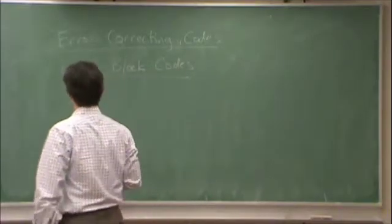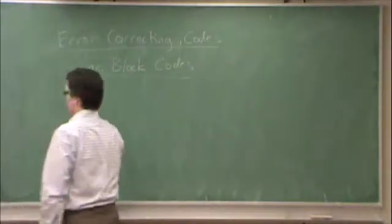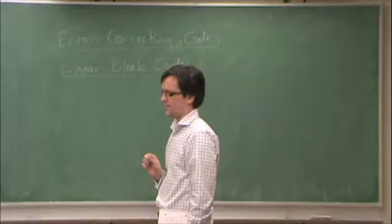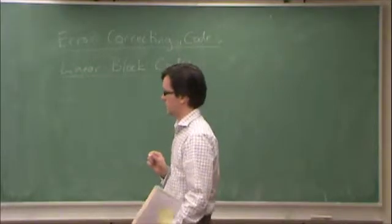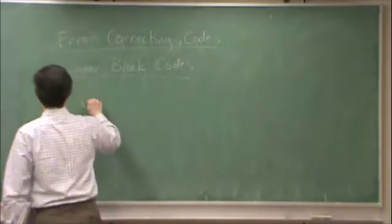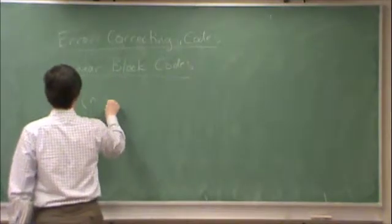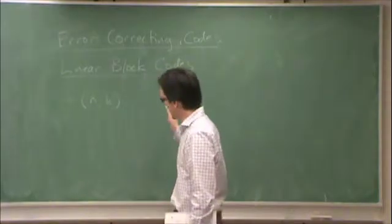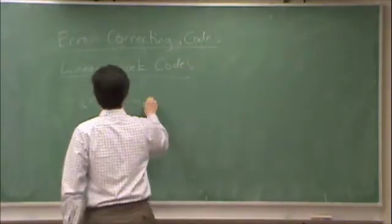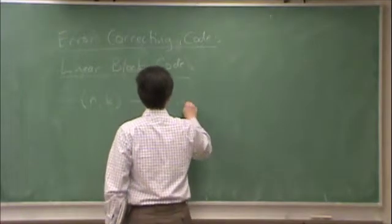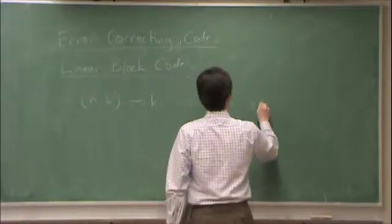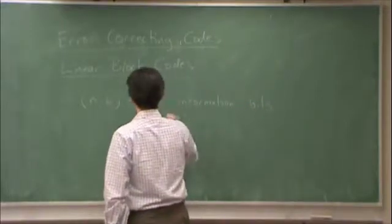Our notation here is confusingly similar to the notation we used for codes in the proof of the channel coding theorem. We're going to call things nk codes. Remember previously we were talking about two to the nr codes. nk now means we have k information bits and n coder bits.